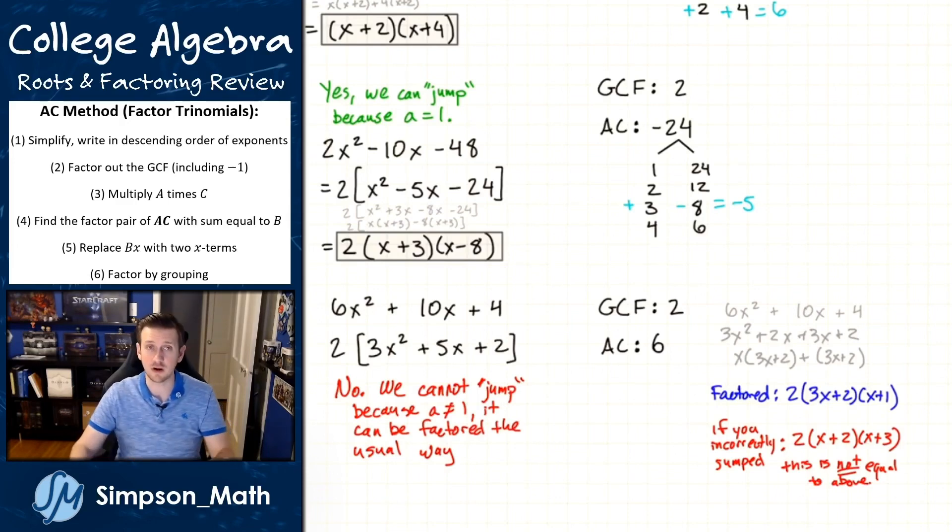So from this point on, whenever you are factoring a trinomial, if you see an A of one after the GCF, then you can immediately just jump after you get your factor pairs. Decide the factor pairs and then jump. You can skip the middle two steps every time here on out.